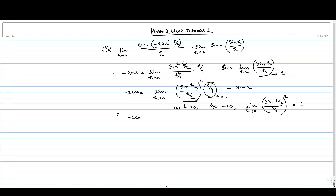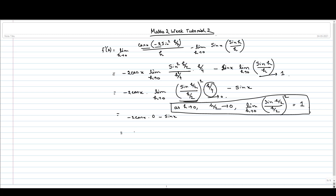So we get 0 minus sin x, which equals minus sin x. Therefore the derivative of cos x, derived from the definition of the derivative, is minus sin x. Now let us try to visualize this using graphs in GeoGebra.